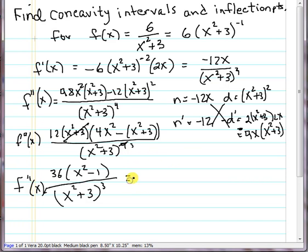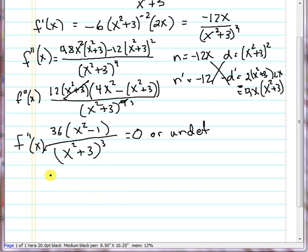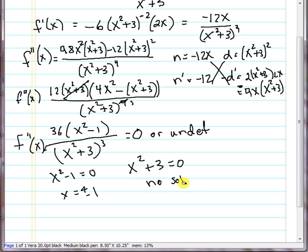So again, we want to find values that make that equal to zero or undefined. To find equal to zero, we're going to solve x squared minus 1 equals zero, and we get plus or minus 1 for that. And if we look at the denominator equal to zero, there are no numbers for that, so there are no values where the second derivative is undefined.